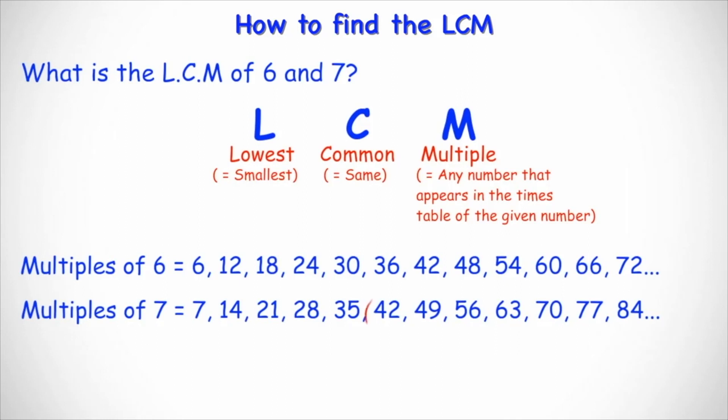And if we look carefully in both lists, we can see that 42 appears in the times table for six and seven. And therefore the LCM of six and seven equals 42. And that's how easy it is.